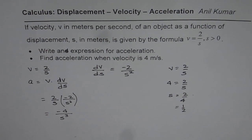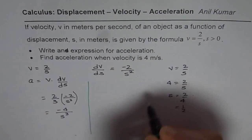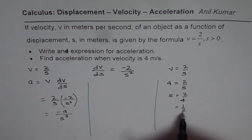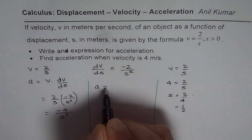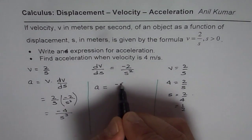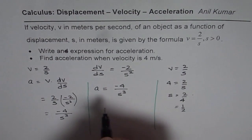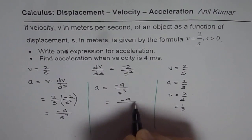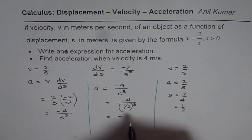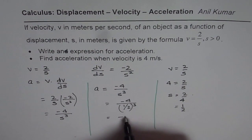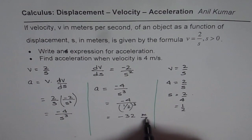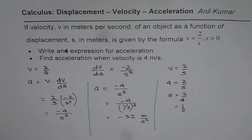We will substitute half for s and calculate acceleration. Acceleration equals minus 4 over s cubed, and s is half, so it is minus 4 over half cubed. Half cubed is one-eighth, so minus 4 times 8 gives us minus 32. The units will be meters per second squared. So that becomes our answer.